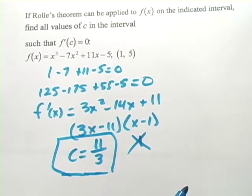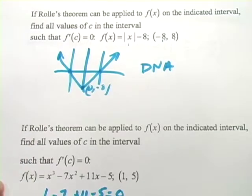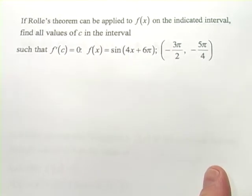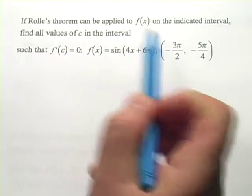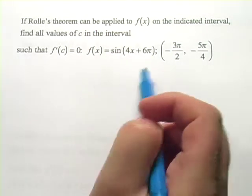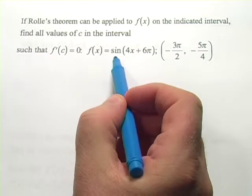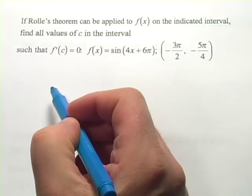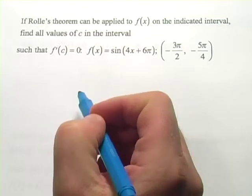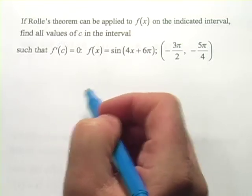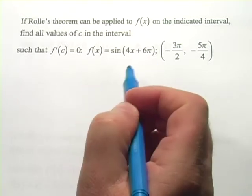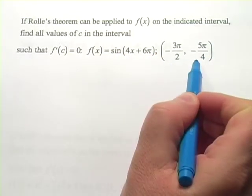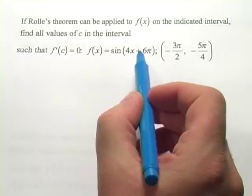Let's try one with a trigonometric function — these can be pretty tricky. Same business: if the theorem can be applied, find c. Our function here is sine of (4x + 6π). The sine function goes up and down but it's continuous and differentiable along its whole domain, so we don't have to worry about that. We do need to test the endpoints of our interval.